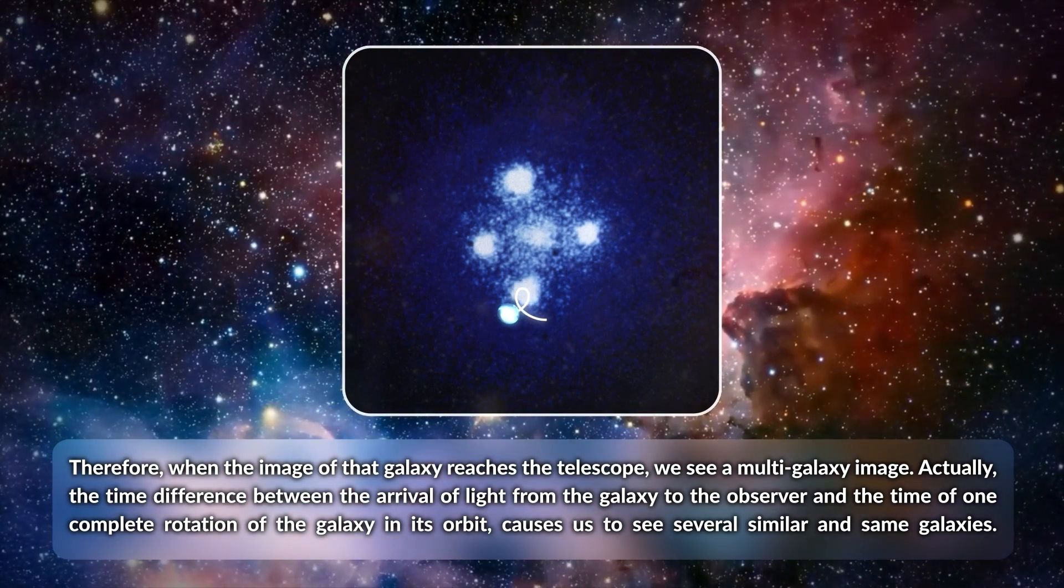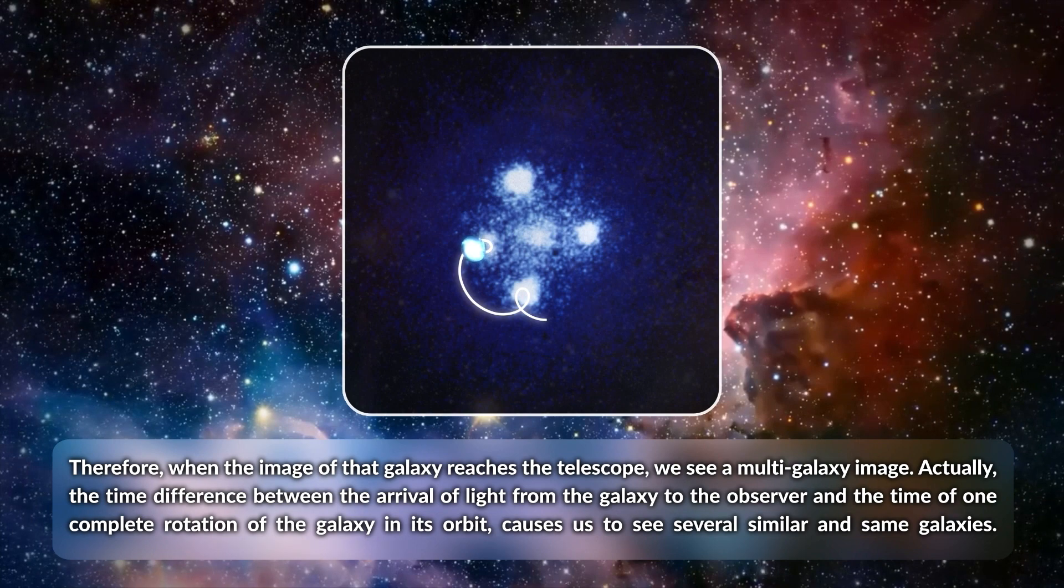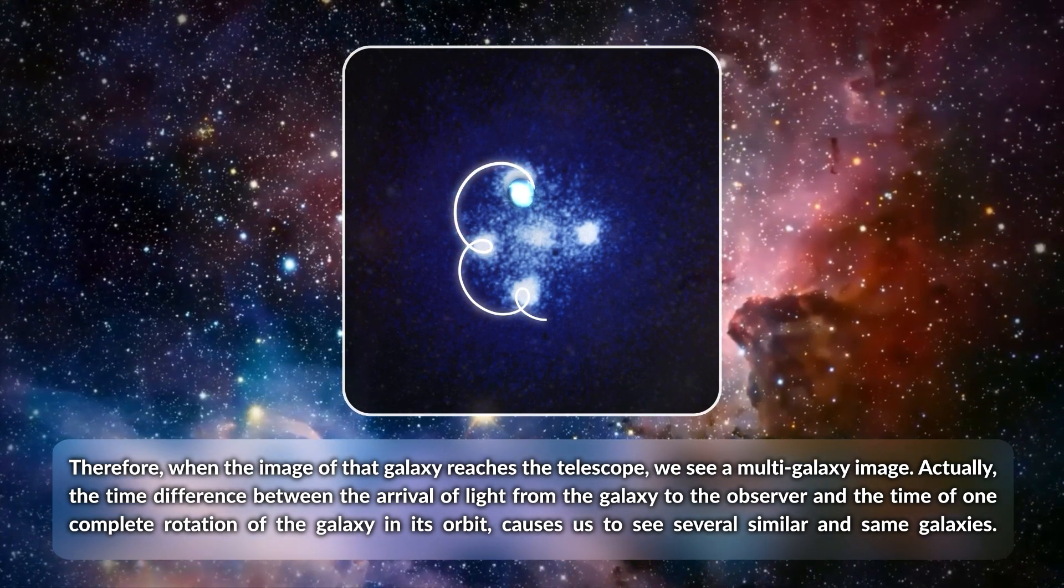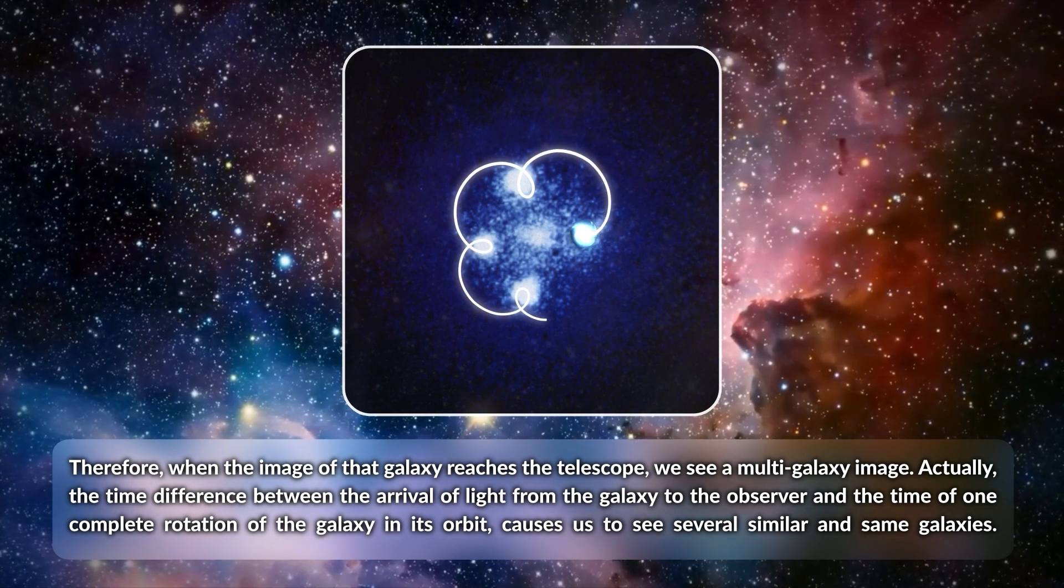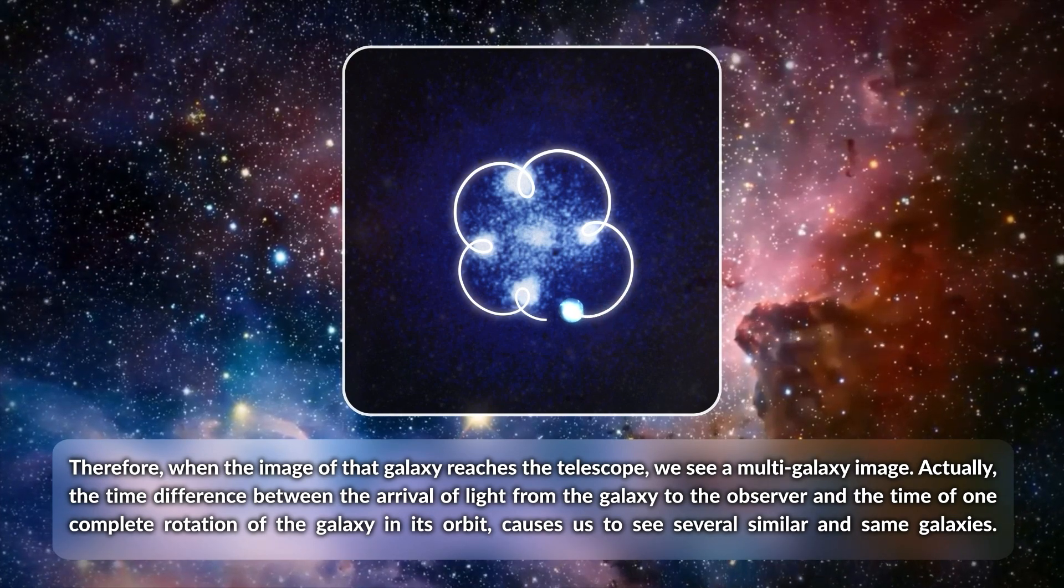Therefore, when the image of that galaxy reaches the telescope, we see a multi-galaxy image. Actually, the time difference between the arrival of light from the galaxy to the observer and the time of one complete rotation of the galaxy in its orbit causes us to see several similar and same galaxies.